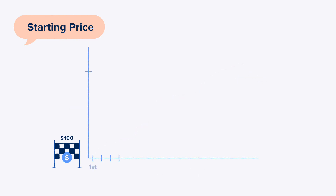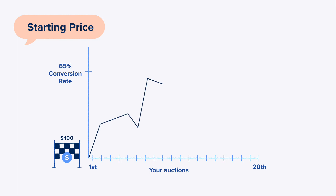At this time, all sellers with a conversion rate under 65%, including new sellers, must start their auction at $100. Once a seller reaches the minimum conversion rate over their next 20 auctions, they're allowed to set their own starting price. However, we continue to encourage low starting prices in order to maintain conversion rate and maximize sale prices.